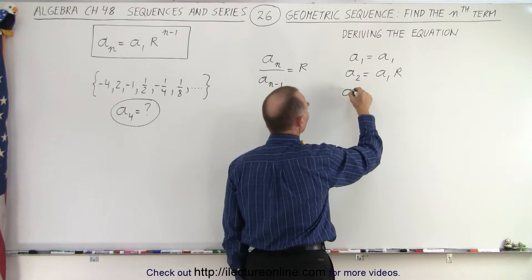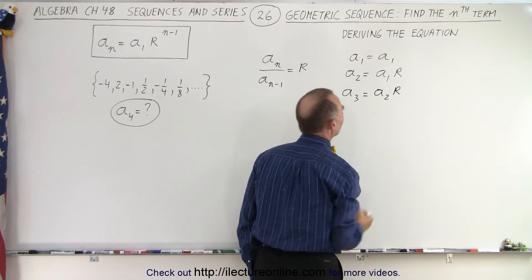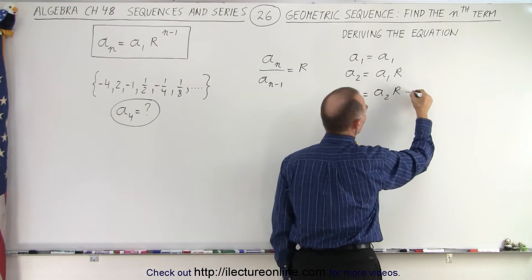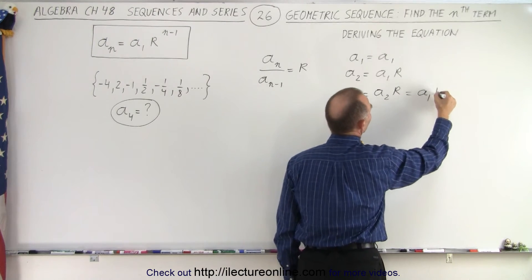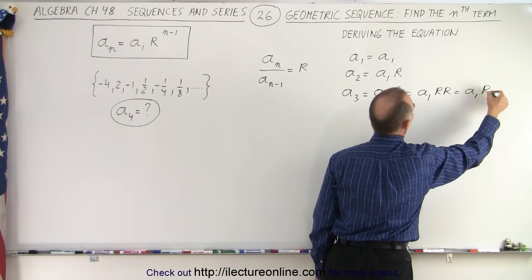So what if we now get a_3? Well that's going to be equal to a_2 times the common ratio. But a_2 is equal to a_1 times r, so this can be written as a_1 times r times r, or a_1 times r squared.